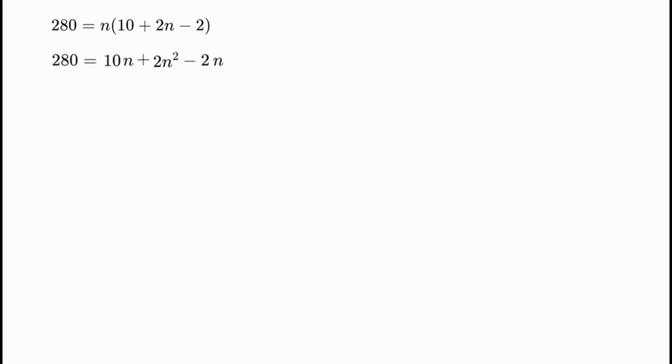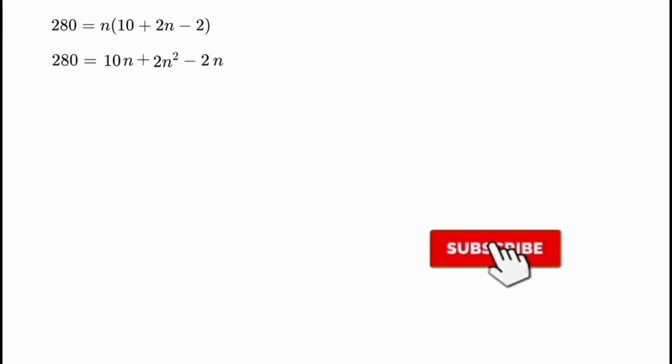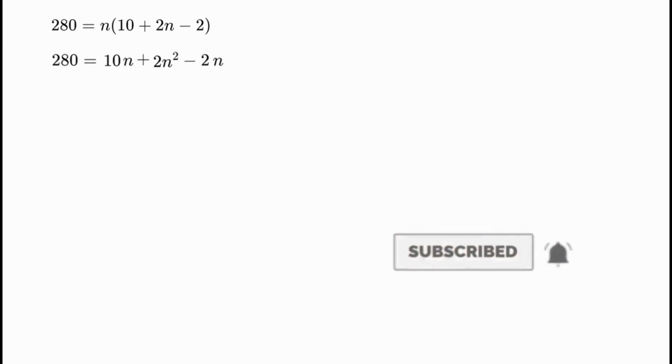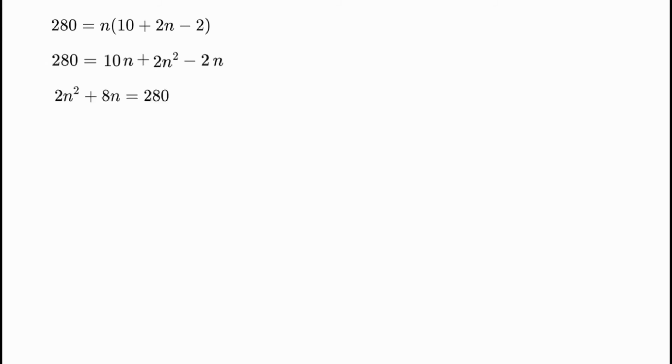So 280 equals 10n plus 2n squared minus 2n. Combining like terms: 10n minus 2n equals 8n. This gives 2n squared plus 8n equals 280.